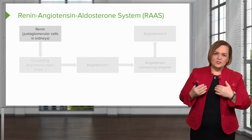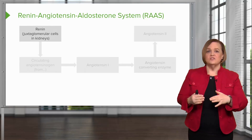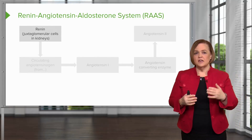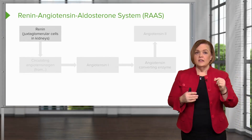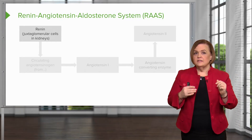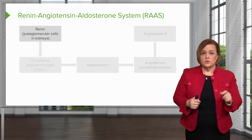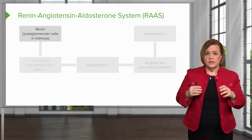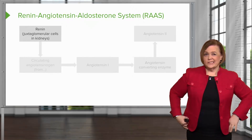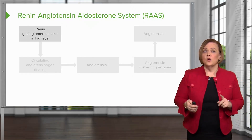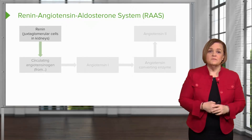Renin is excreted from these J cells in the kidney. Why? Because the body sensed a need to raise blood pressure. That's why renin is squirted out through your kidneys.